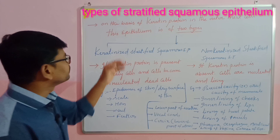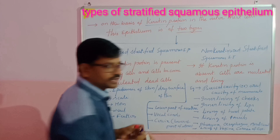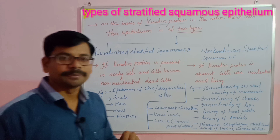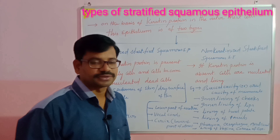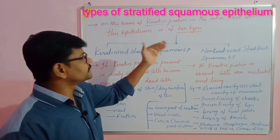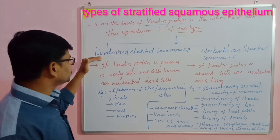We are talking about the types of stratified squamous epithelium on the basis of the presence or absence of keratin. Keratin is a protein synthesized by specialized cells called keratinocytes, found in the epidermis of the skin. When these keratinocytes reach the topmost layer of the body, keratin is deposited. Based on this, the outermost layer is divided into two types: keratinized and non-keratinized stratified squamous epithelium.